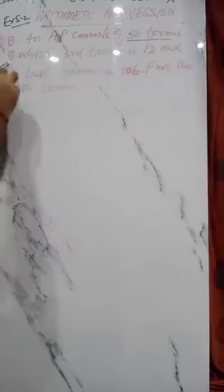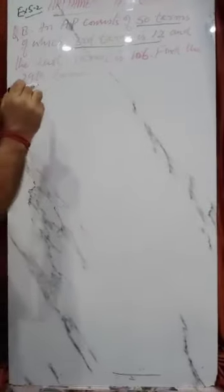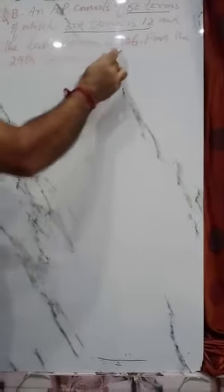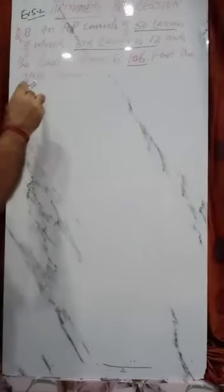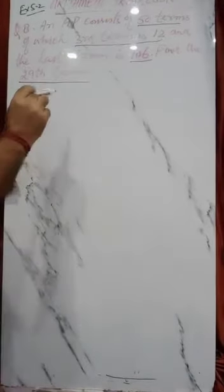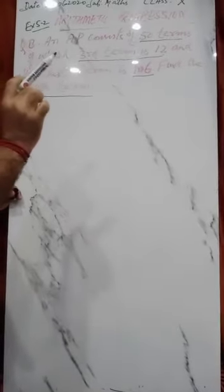Of which the third term is 12, and the last term, the 50th term, is 106. So you have to find the 29th term. What is given here? Total number of terms is 50, so n is 50.